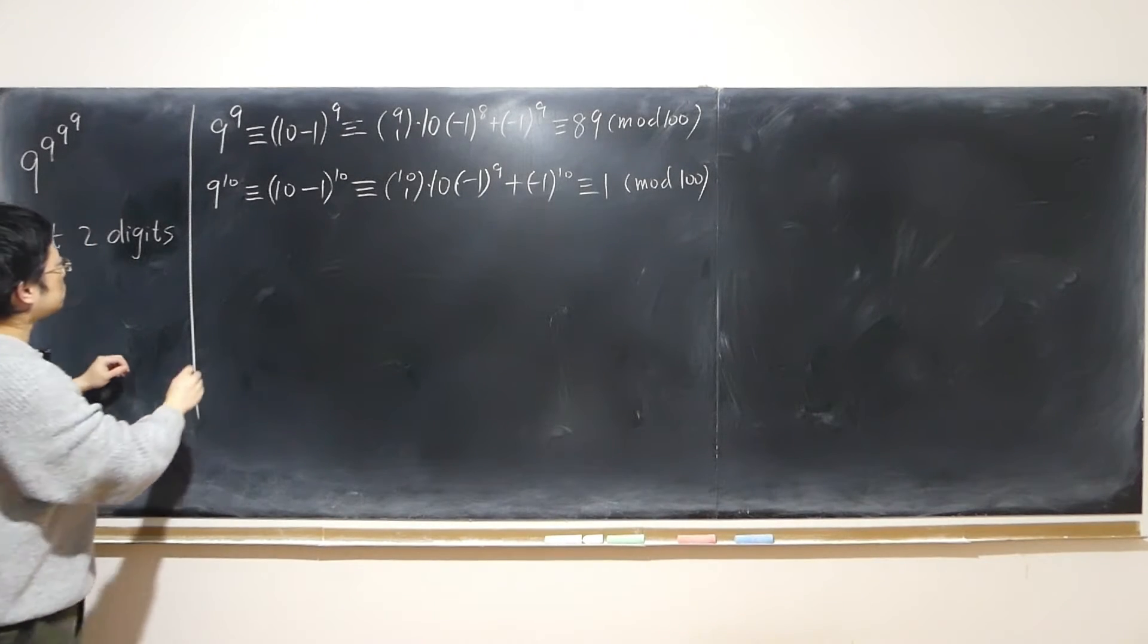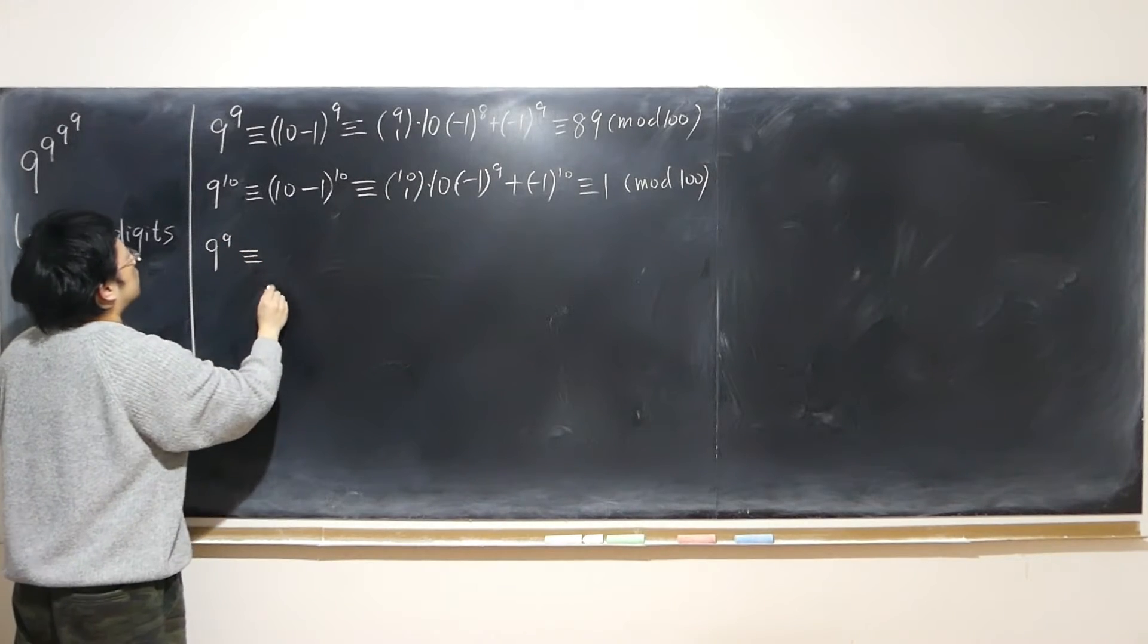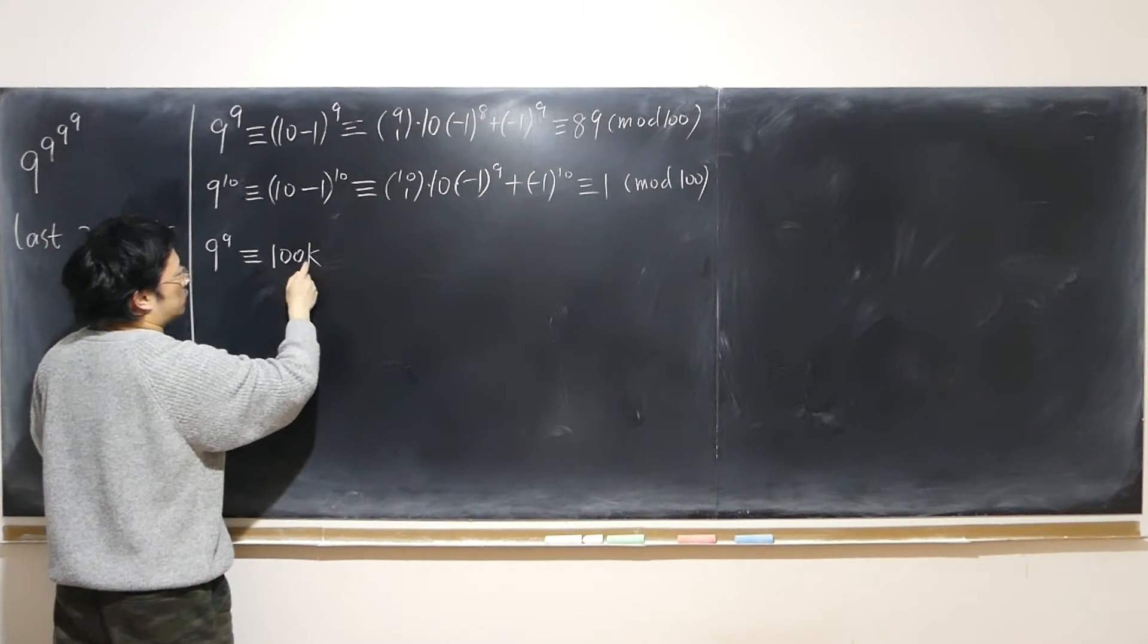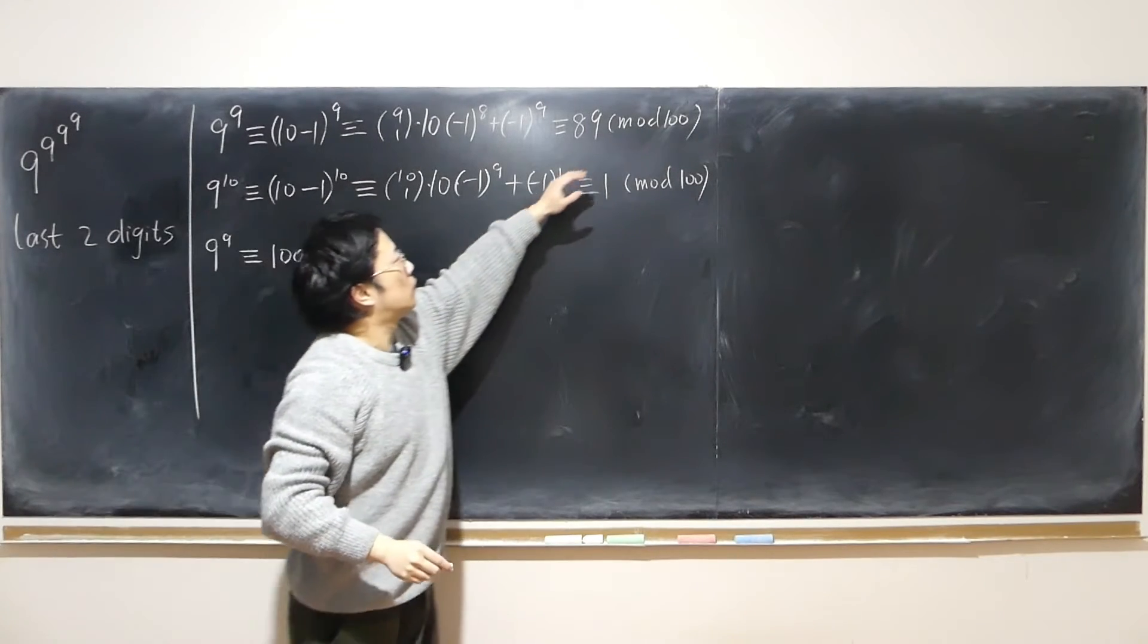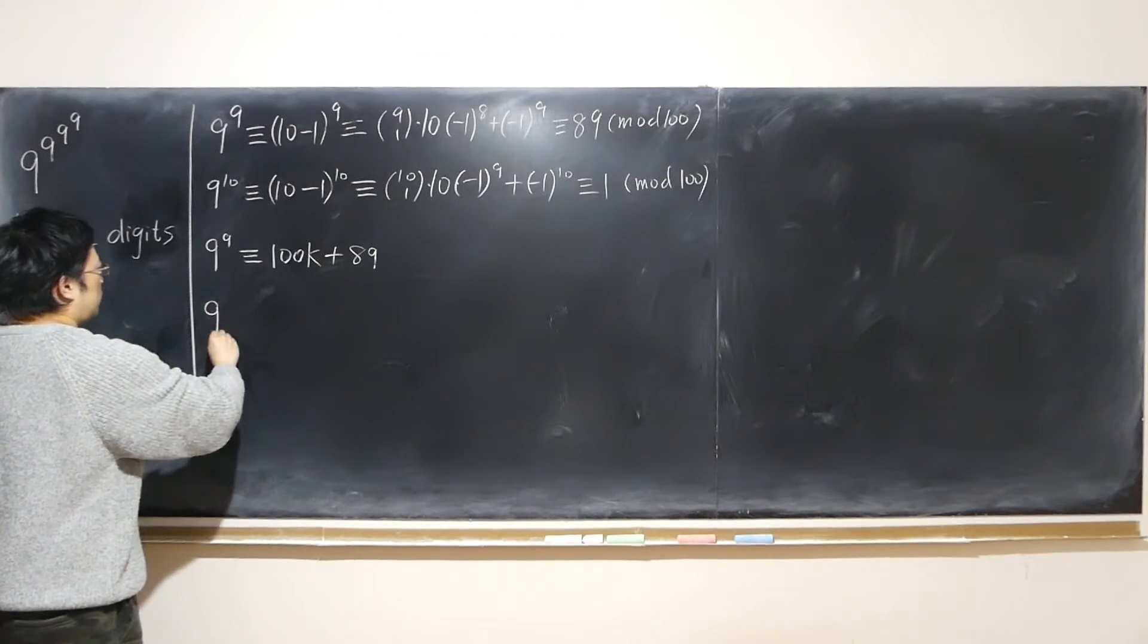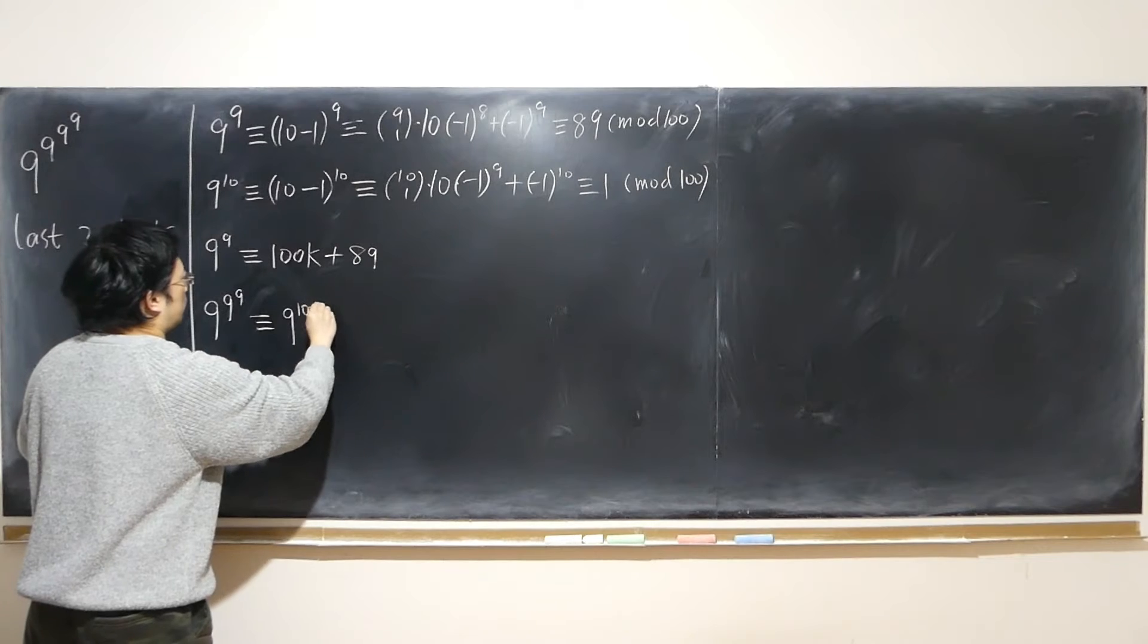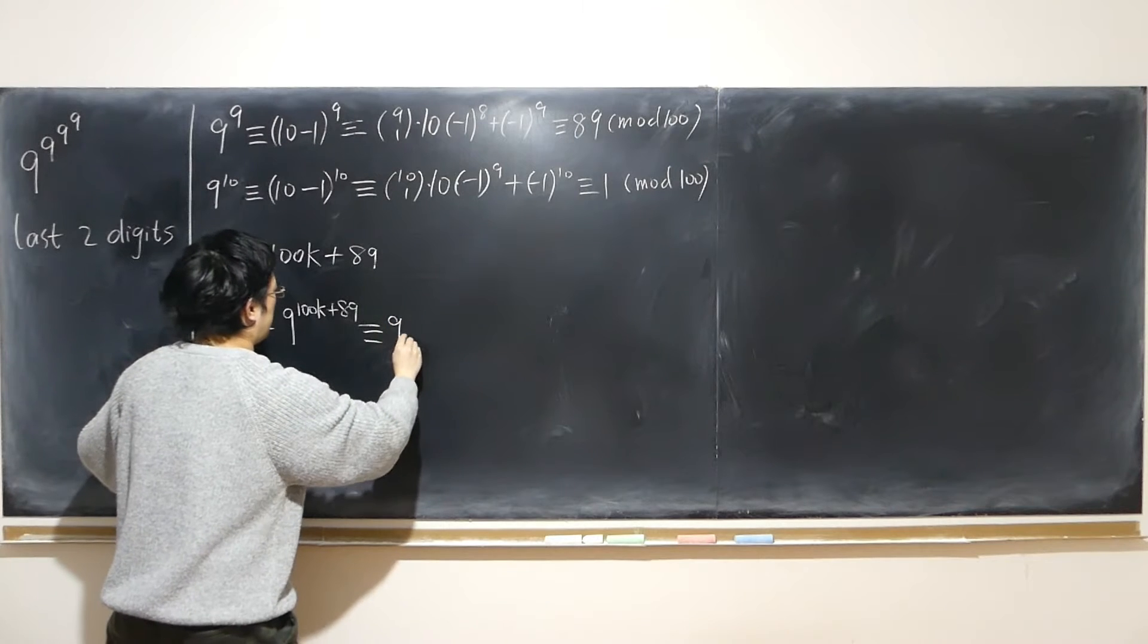Those two will be useful. So right now 9 to the power of 9, since its remainder is 89, it can be written into 100 times some positive integer plus 89. Right, since mod 100, that's the same thing. So 9^9^9 can be written into 9^(100k+89).